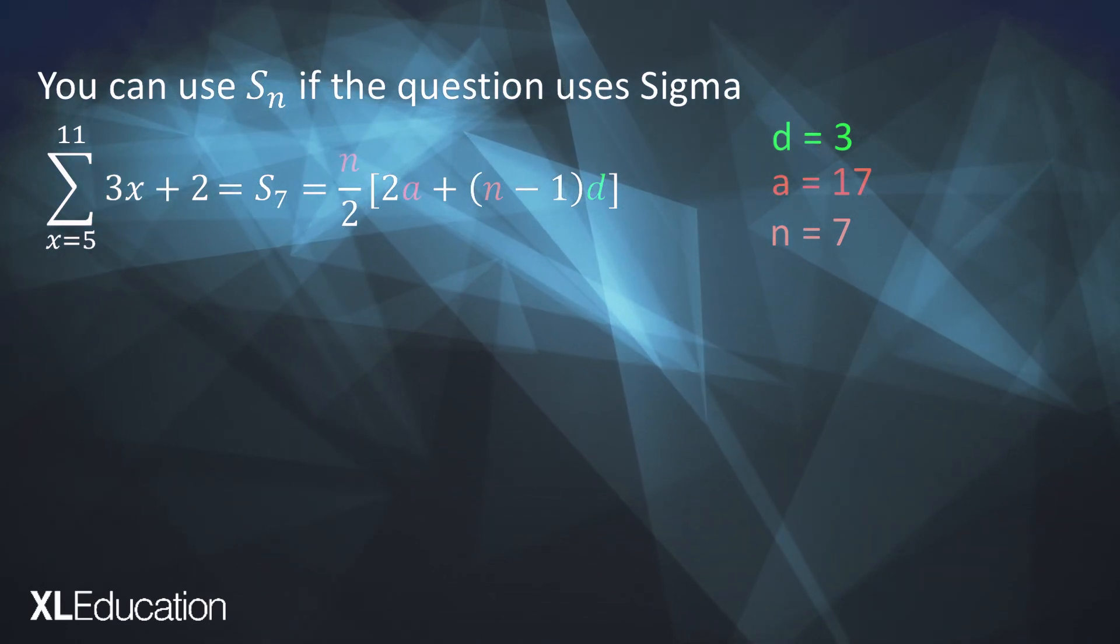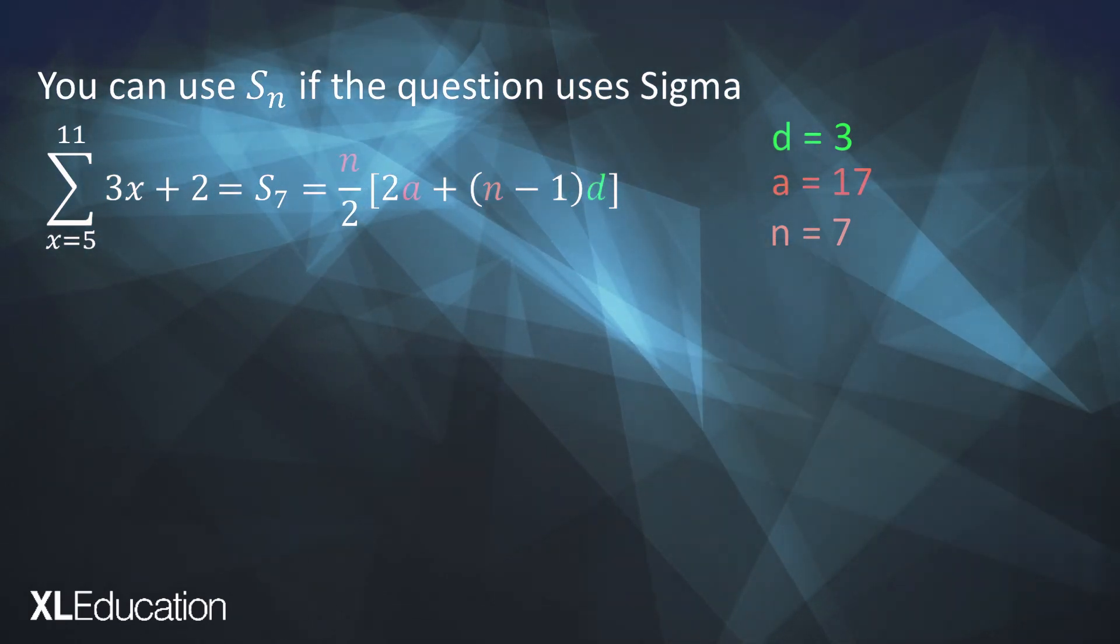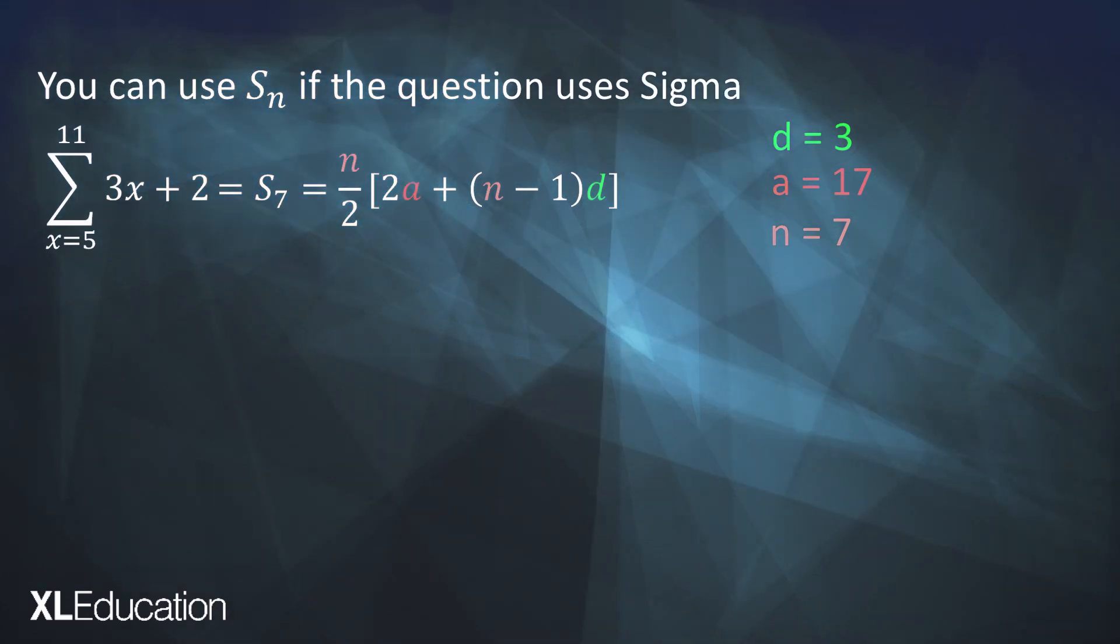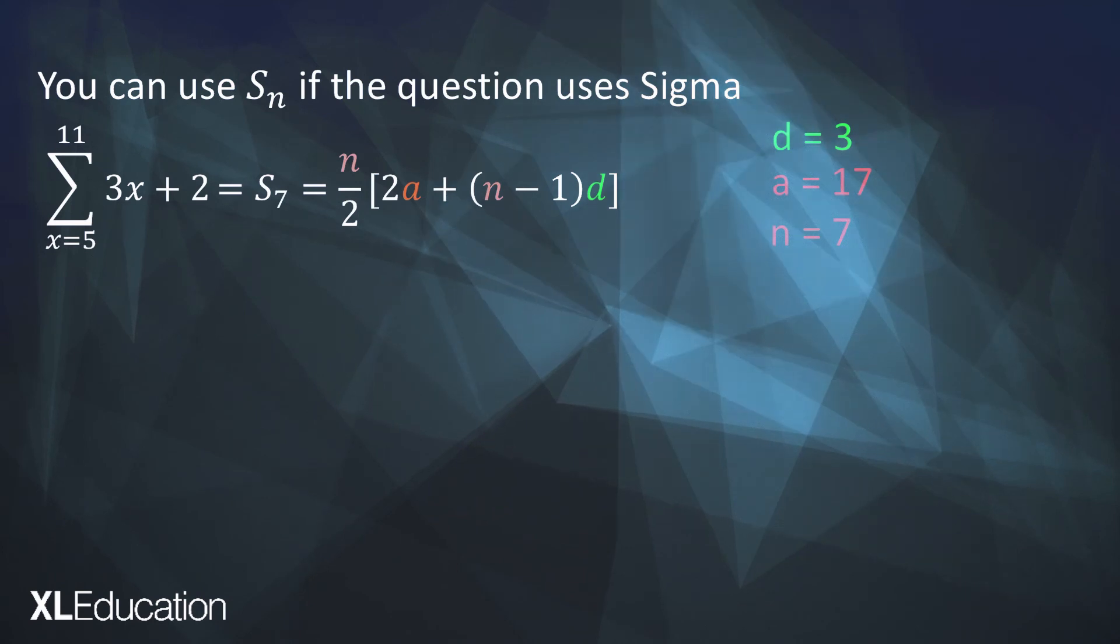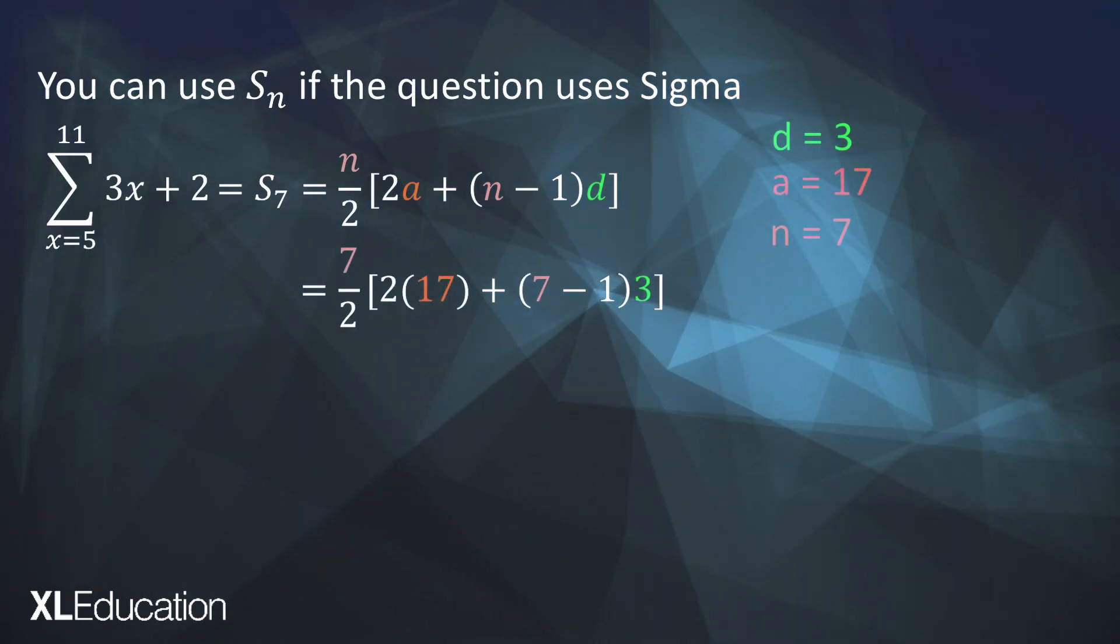So then we can just write the sigma using our formula for the arithmetic series. We found d, a and n. Now we can just substitute in and after that we just work through it on our calculator and we get an answer. How easy was that?